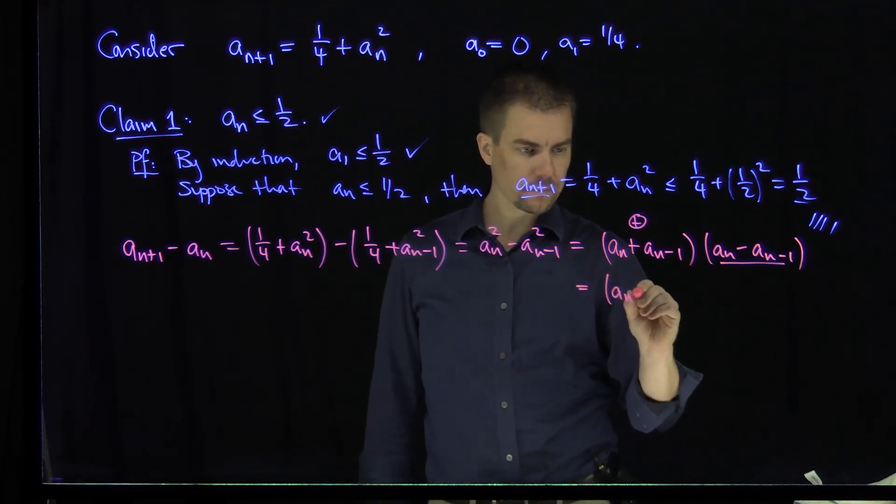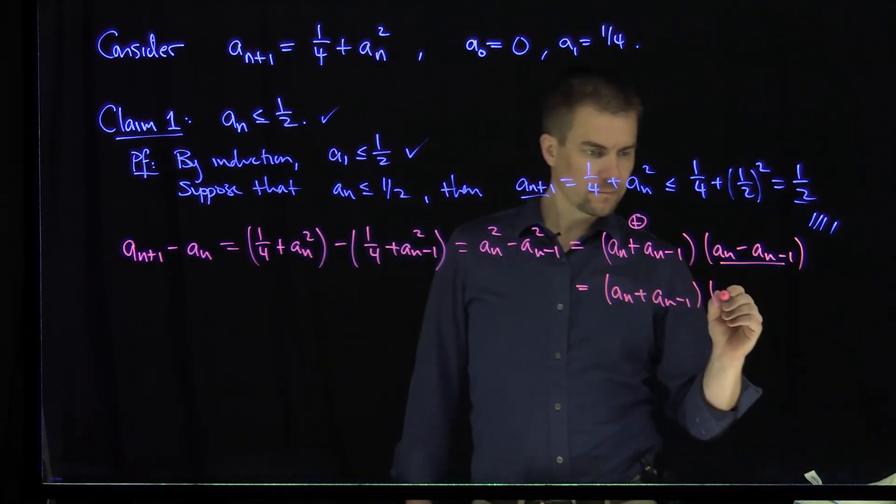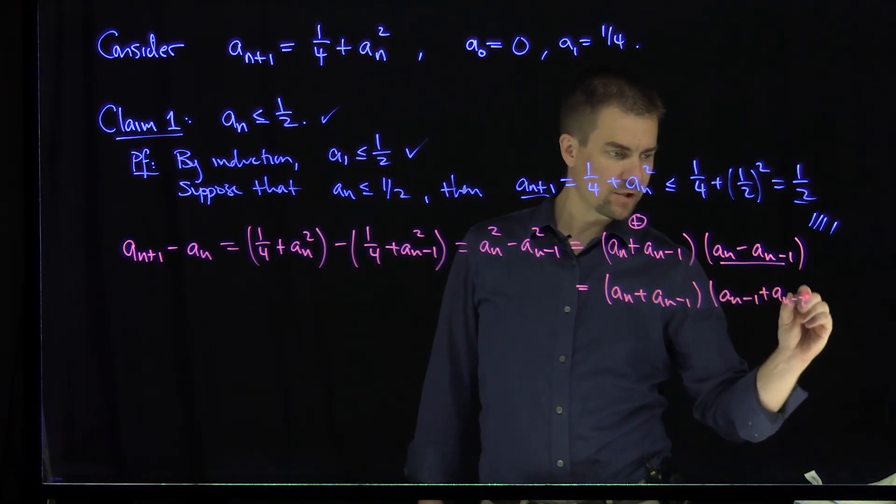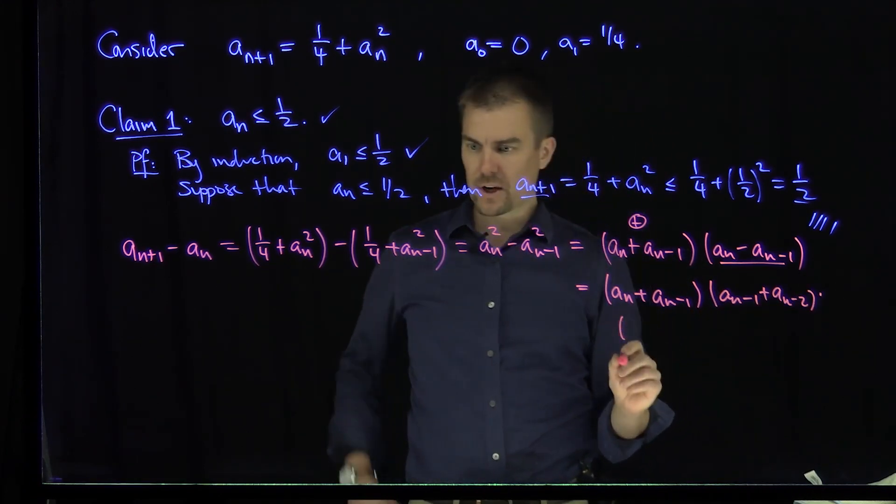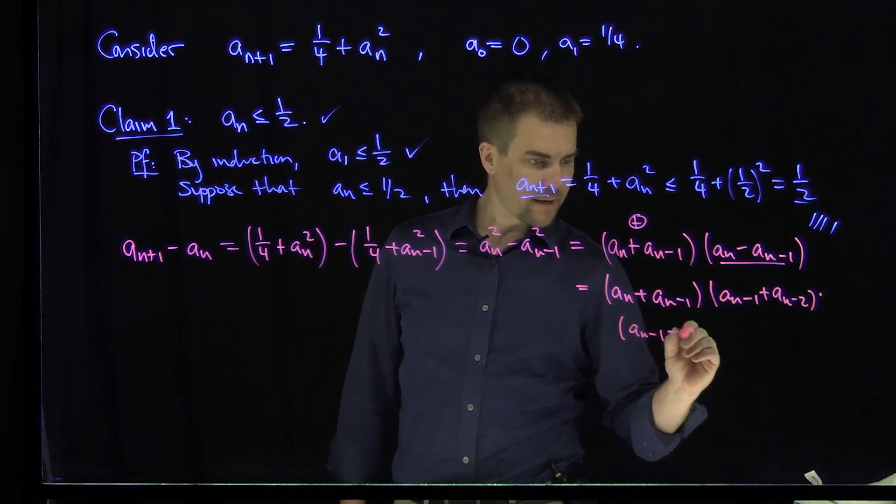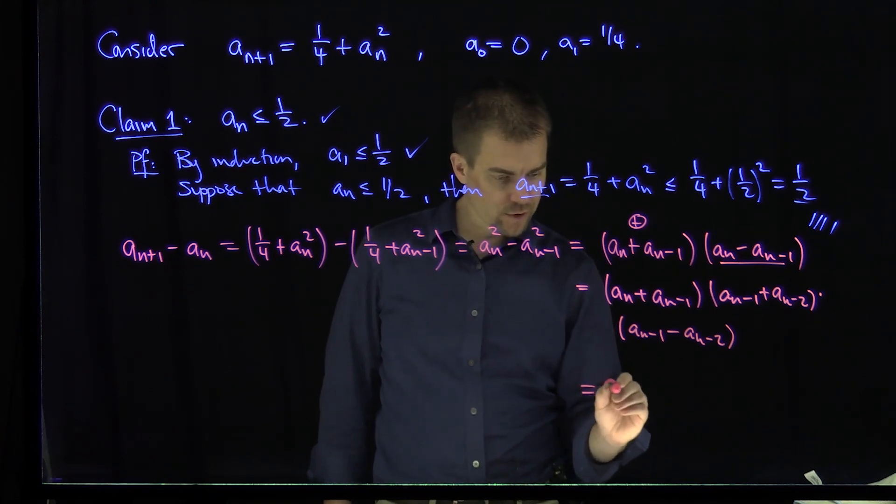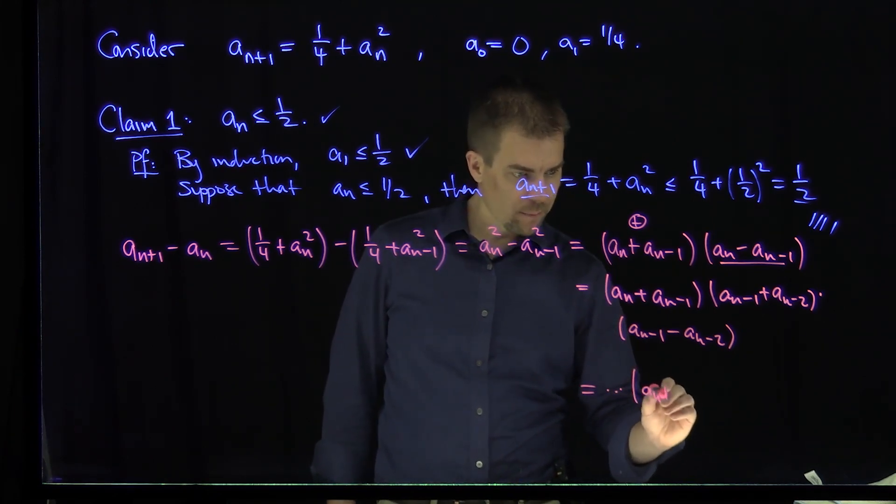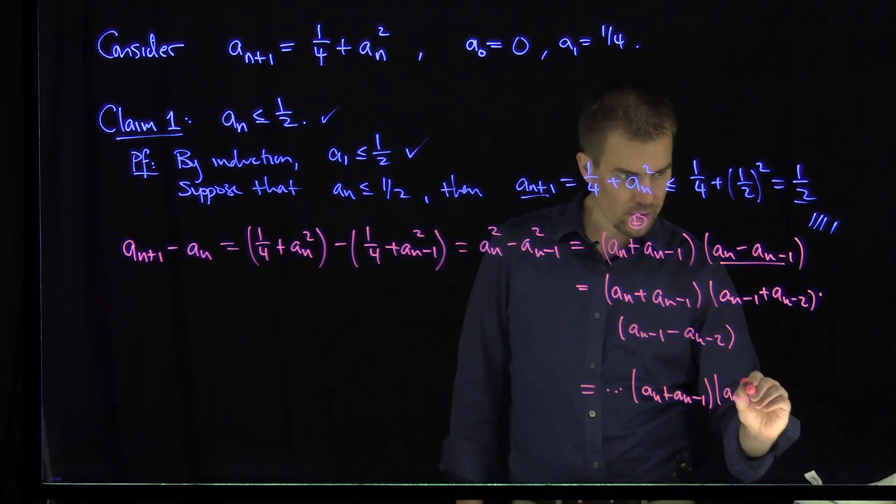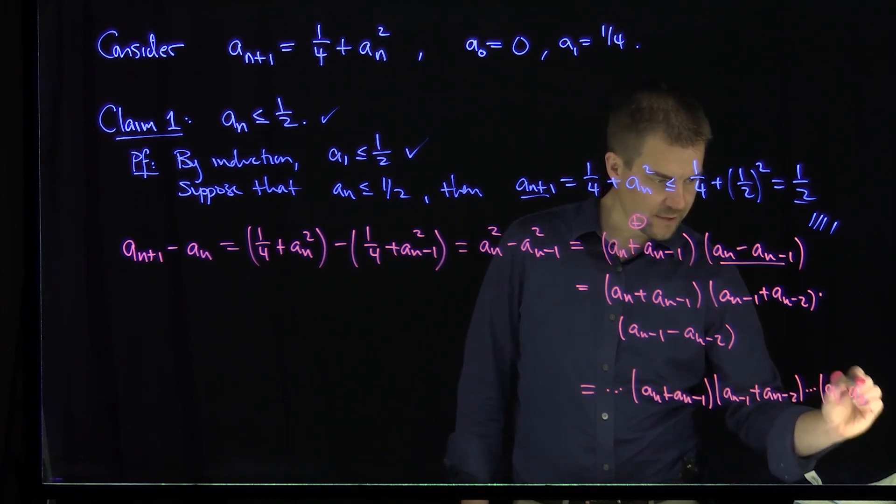So this is going to be (a_n + a_{n-1}), then (a_{n-1} + a_{n-2}) times the next thing in the sequence, which will be the difference of a_{n-1} - a_{n-2}. And so I can turn this crank forever, basically. And so if I turn this a whole bunch of times, I'll be left with (a_n + a_{n-1}), then (a_{n-1} + a_{n-2}), all the way down to (a_1 - a_0). That's where this recursion will stop.